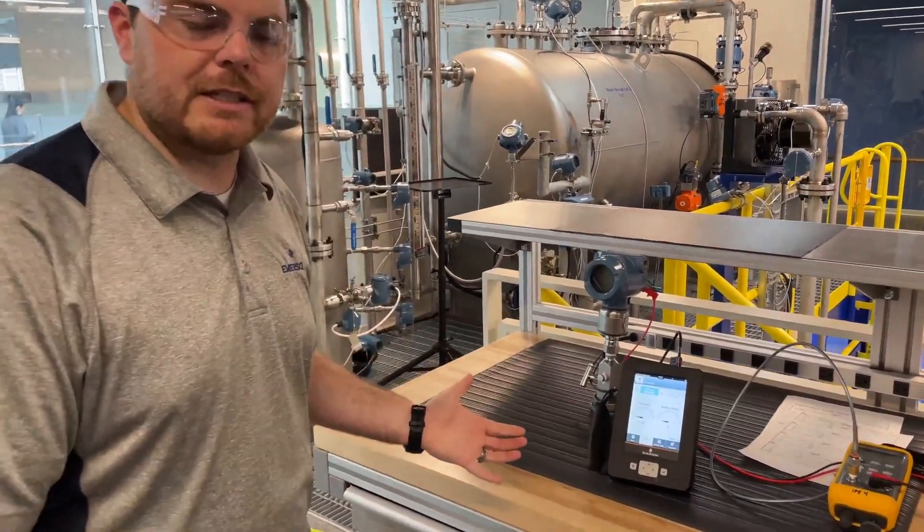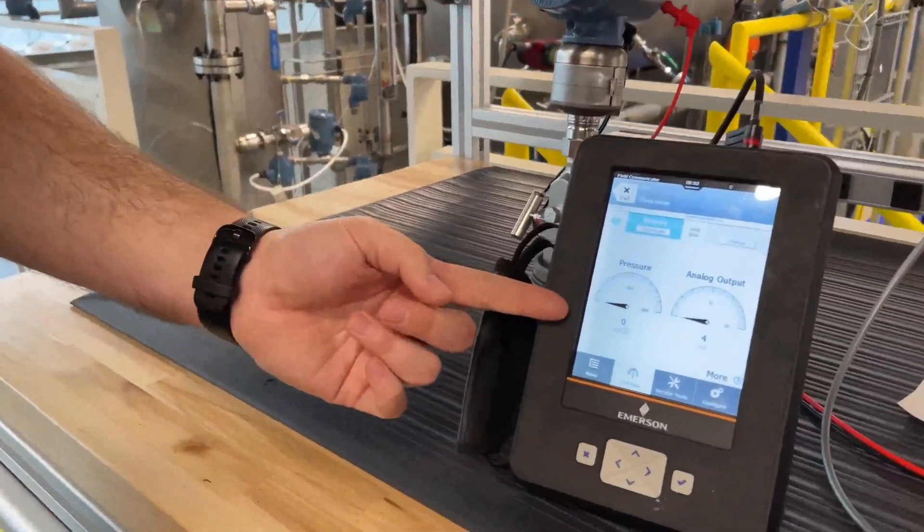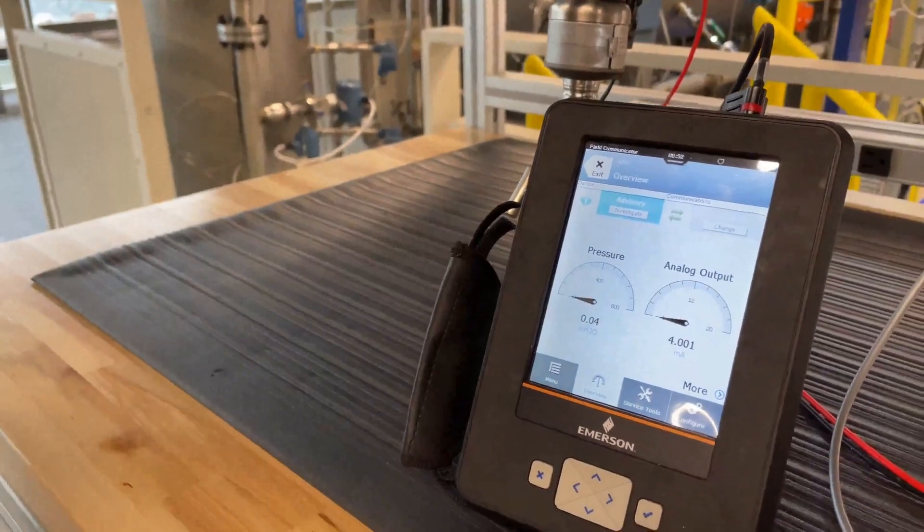As you can see, we just finished our bench calibration. So we have our transmitter sitting at zero pressure and four milliamps.